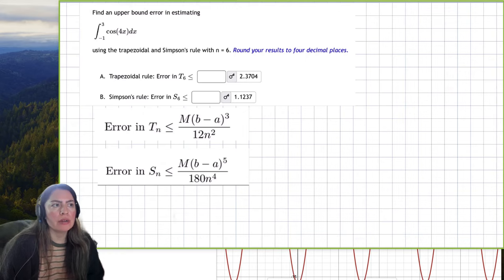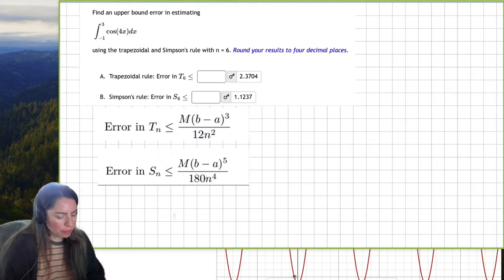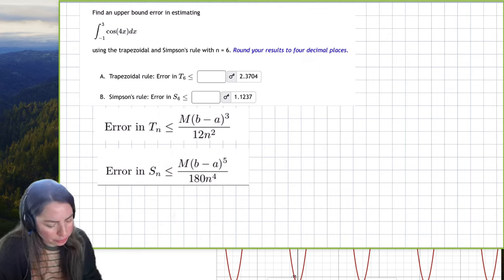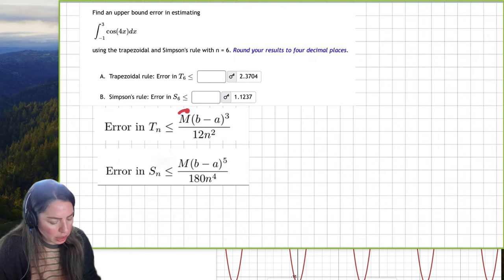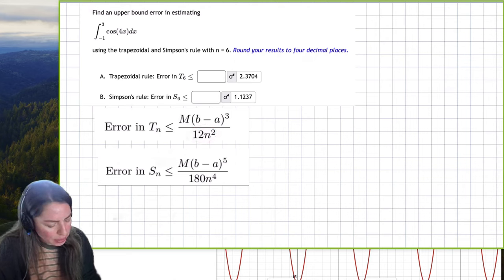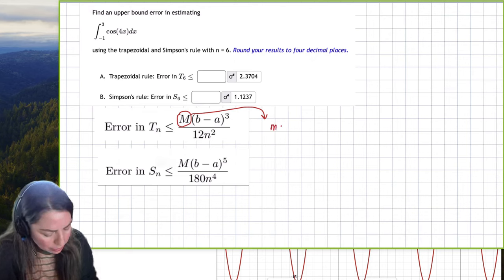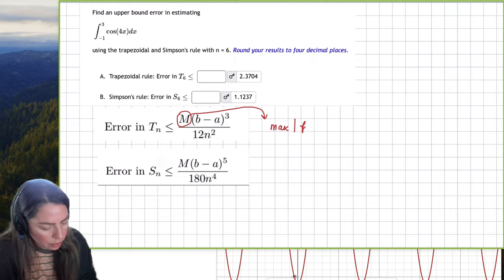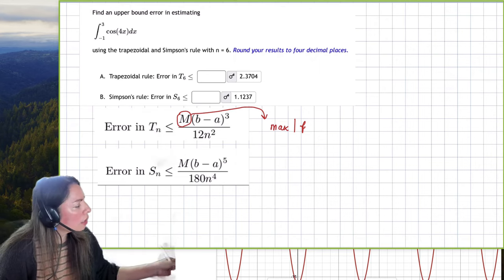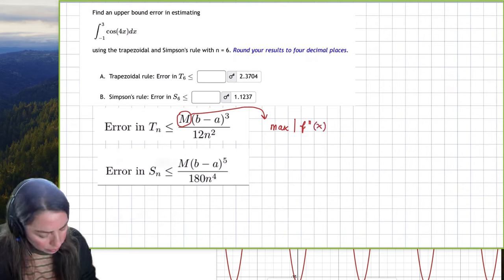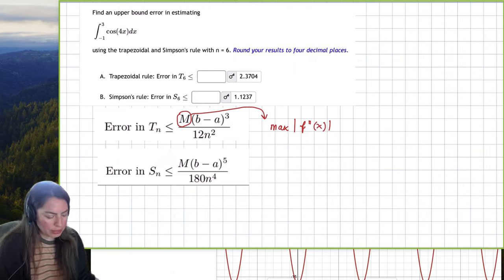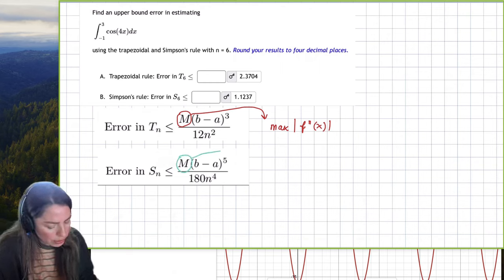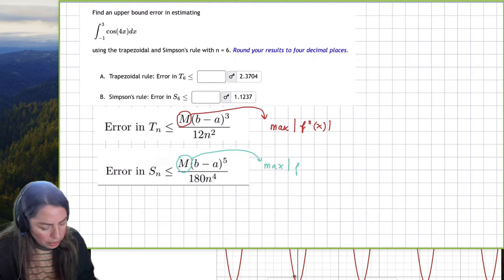There are a couple of formulas provided in our notes. The first one is: the error in the trapezoidal rule with n intervals is less than or equal to M times (b minus a) cubed over 12n squared, where M is the maximum value of the absolute value of the second derivative. For Simpson's rule with n intervals, M is the maximum value of the fourth derivative.